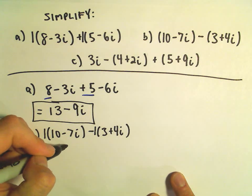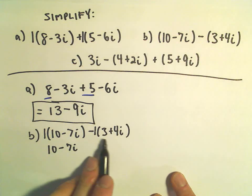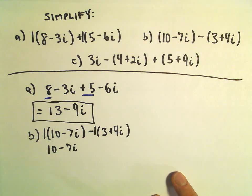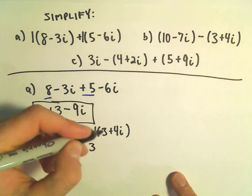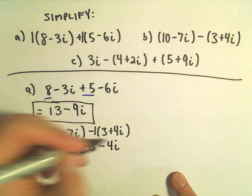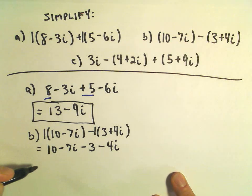So if we distribute, we'll get 10 minus 7i. Now we have to be careful when we distribute our negative to change the signs. So we'll get a negative 3 and then a negative 4i when we distribute.